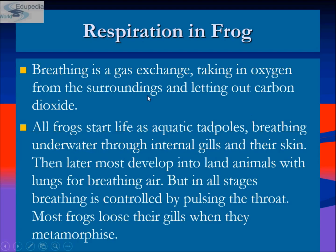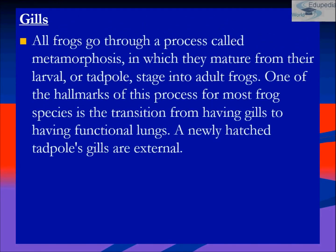Most frogs lose their gills when they metamorphose. There are three respiratory organs: gills, lungs, and skin. All frogs go through metamorphosis, maturing from the larval (tadpole) stage to the adult stage. One hallmark of this process for most frog species is the transition from having gills to having functional lungs.